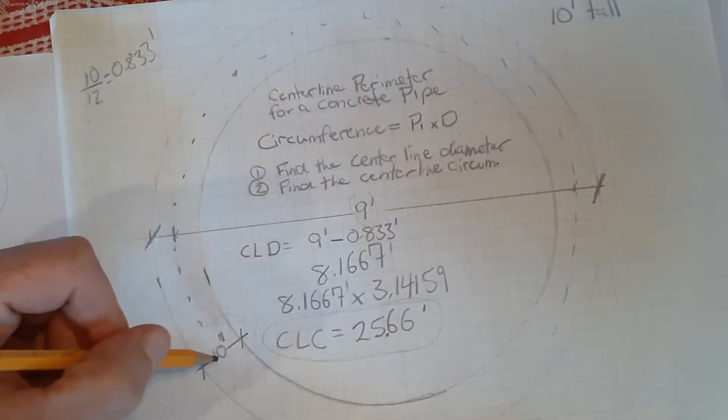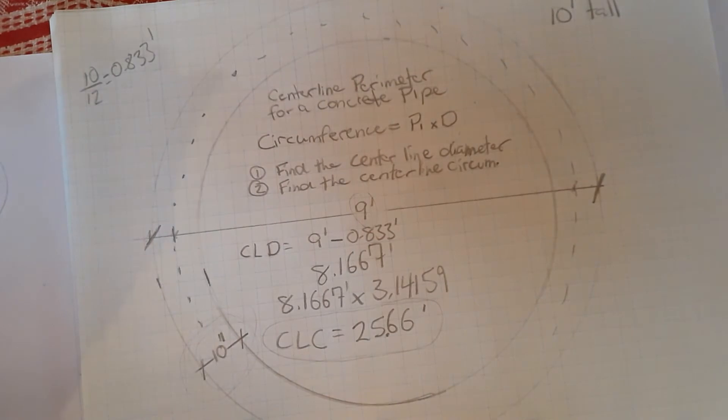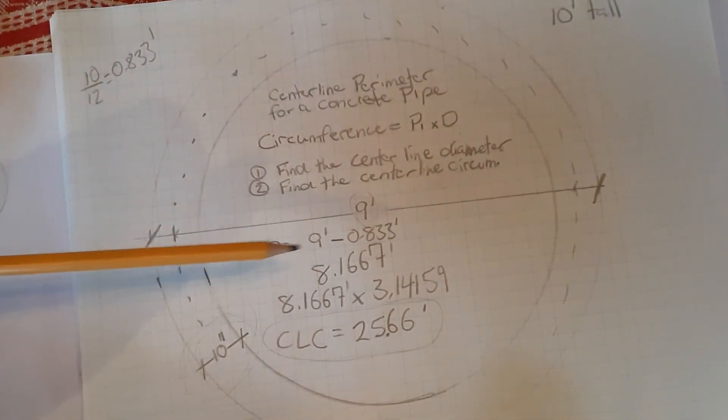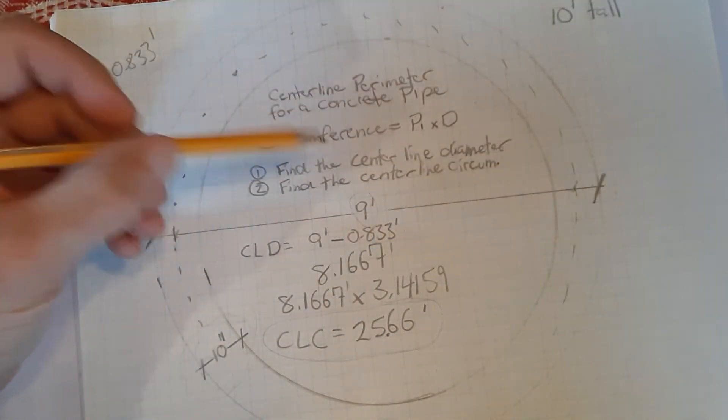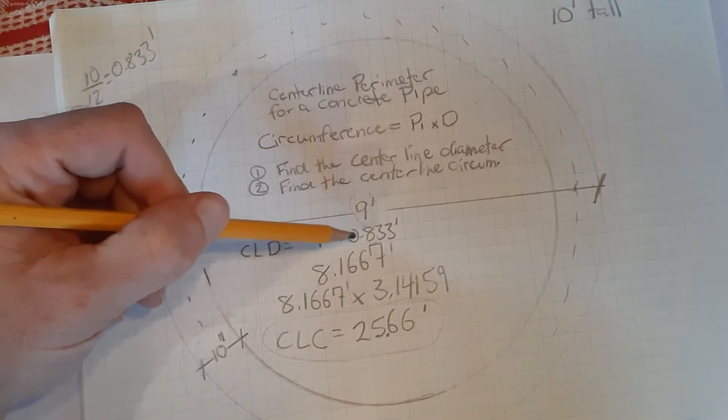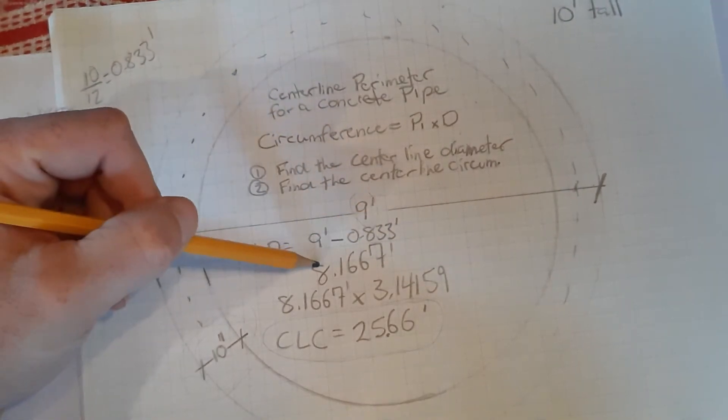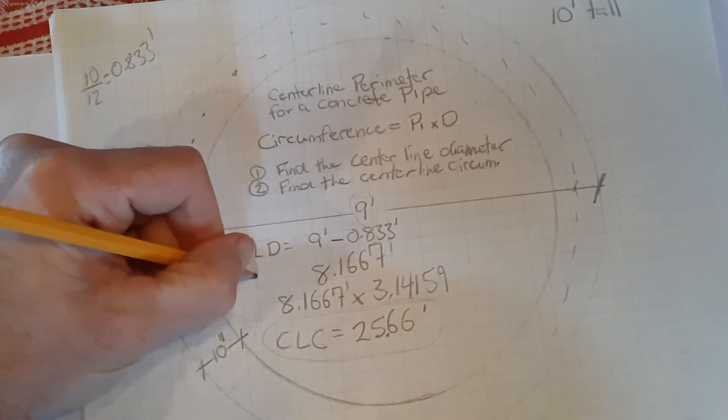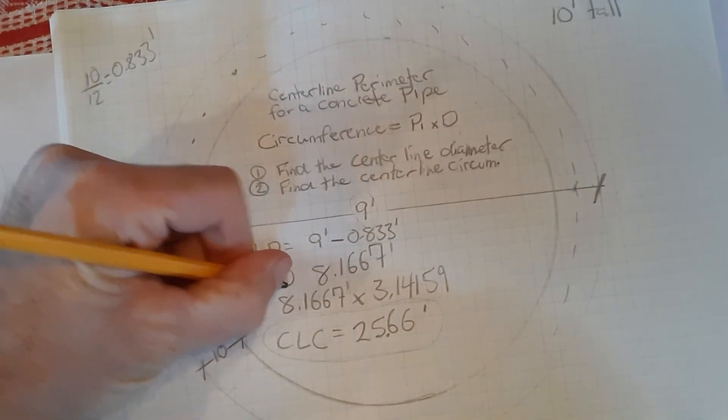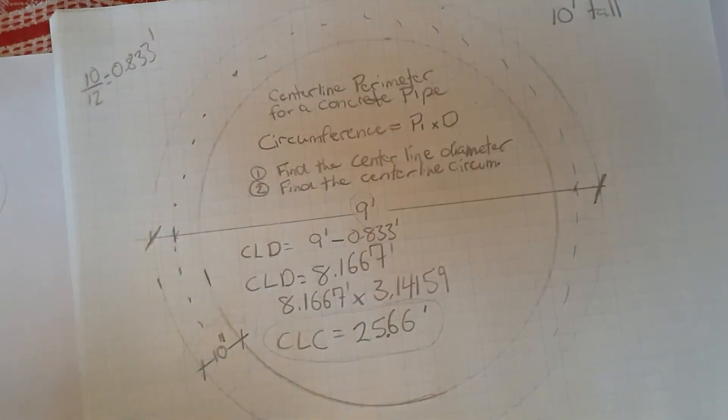So five plus five equals ten. So what we're going to do to find our center line diameter, we're going to take our existing outside of pipe diameter, nine feet, and we're going to subtract the full wall thickness, which is half on the left, half on the right. So we're going to subtract 0.833 feet, and that is going to give us a center line diameter of 8.1667 feet.